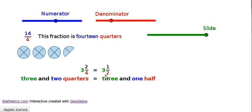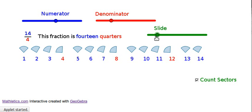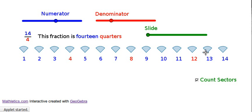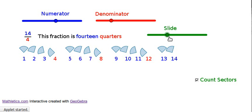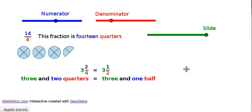So on a number line, it's exactly in between number 3 and number 4. But 14 quarters, sometimes it's easy to think about these things as 14 individual quarters all lined up.